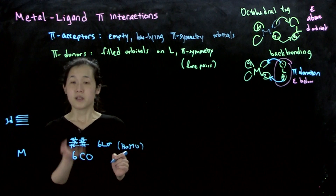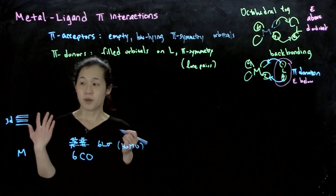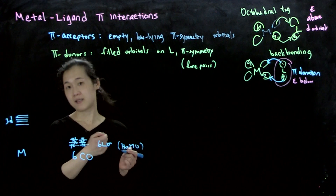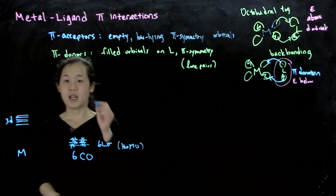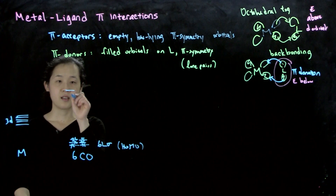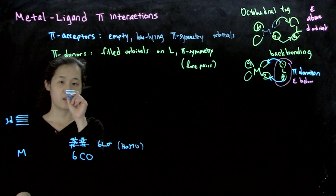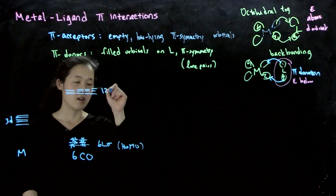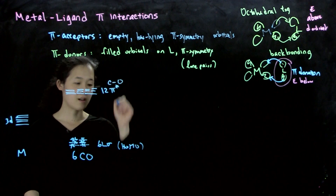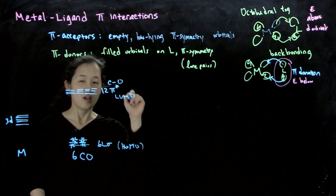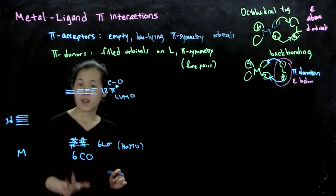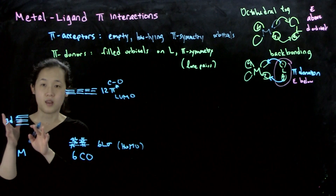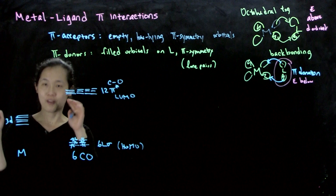CO also has the LUMO, which is the pi star orbitals, higher in energy than the sigma HOMO — that was the middle sigma orbital for CO. So now we have 12 (2 times 6) pi star orbitals — CO pi star — and these are the LUMO. These are empty. So we have overall 18 orbitals that can interact in different ways with the 5 3d orbitals.